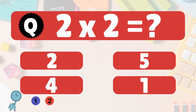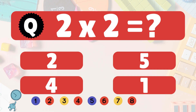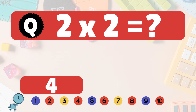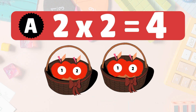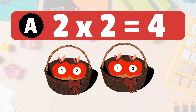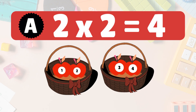Next, 2 times 2 is what? 2 times 2 is 4. Here we have 2 groups of 2 apples each. Let's count them all: 1, 2, 3, 4. So 2 times 2 is 4 apples.